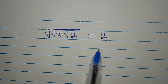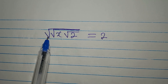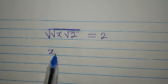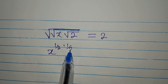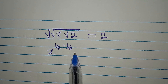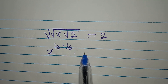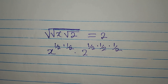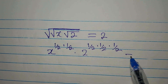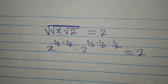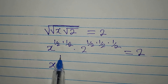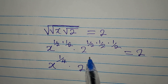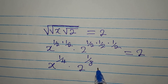For the second method, we have square root of square root of x times square root of 2, equals 2. Now x is under 2 square roots, so we can write it as x to the power of 1 over 2 times 1 over 2. Then this 2 is under 3 square roots, so we have 2 to the power of 1 over 2 times 1 over 2 times 1 over 2, and the whole expression equals 2. Multiplying those, we have x to the power of 1 over 4.